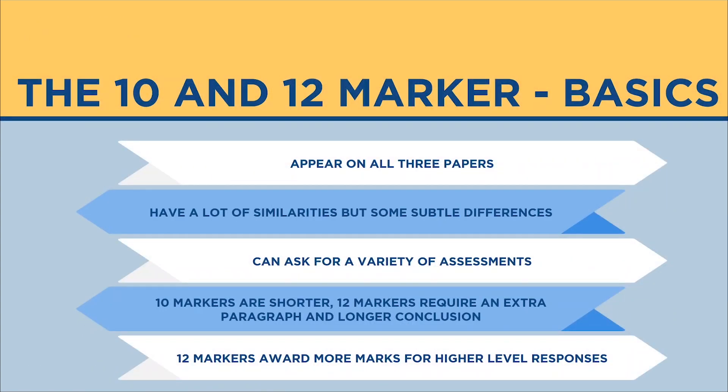The 10 and 12 marker have a lot of similarities, and so that's why I'm doing them together. They do also appear on all three papers. These and the 20 marker are the only questions that you get on papers one, two, and three, and you'll get two 10 markers and two 12 markers. They're probably the most important parts of timing. The 20 marker is quite easy to time, but these 10 and 12 markers can be a little bit tricky, so we're going to talk about where you want to focus your time and make sure you get them both done within around 22 to 24 minutes.